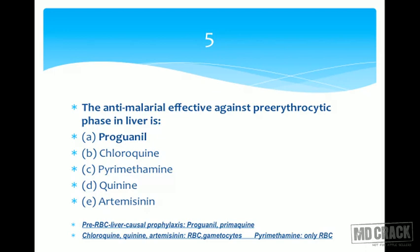To summarize anti-malarial stages: chloroquine, quinine, and artemisinin inhibit the RBC stage and gametocytes. Pyrimethamine inhibits only the erythrocytic stage. Proguanil and primaquine provide causal prophylaxis by acting on the pre-erythrocytic liver stage. It is worth reviewing the malaria chapter for a complete table of which drugs act on which stages.